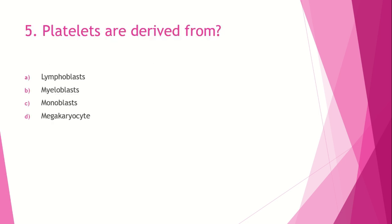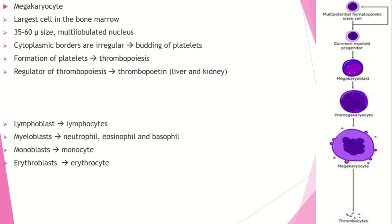Question number 5: Platelets are derived from? Option A, lymphoblast; option B, myeloblast; option C, monoblast; option D, megakaryocyte. The answer is option D, megakaryocyte. Megakaryocyte is the largest cell in the bone marrow, about 35 to 60 microns in size, and has a multi-lobulated nucleus. It undergoes megakaryopoiesis — also called thrombopoiesis.